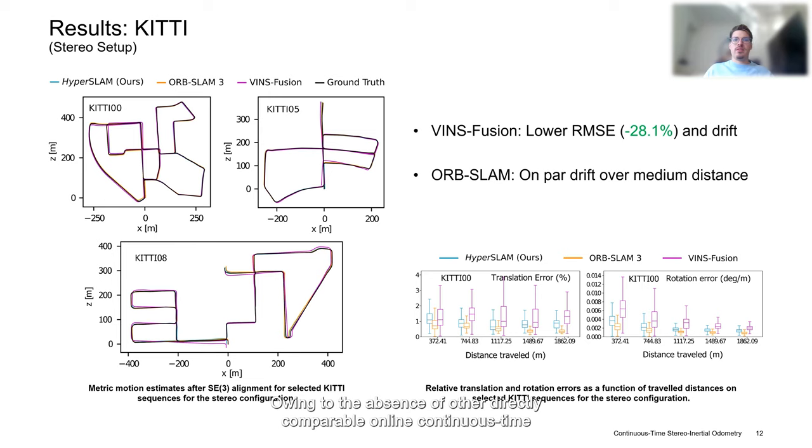Owing to the absence of other directly comparable online continuous-time frameworks, we initially benchmarked our approach, coined HyperSLAM, against conventional state-of-the-art discrete-time approaches in the stereo and stereo-inertial setups. On the KITTI dataset, we compared HyperSLAM against VINS-Fusion and ORB-SLAM, achieving competitive results. In particular, our approach achieves better RMSEs and lower drift than VINS-Fusion and performs on-par in terms of drift over medium distances against ORB-SLAM.